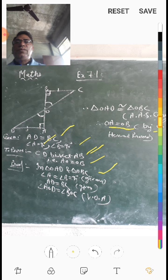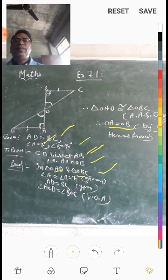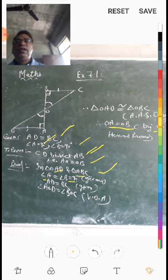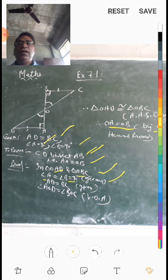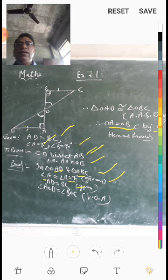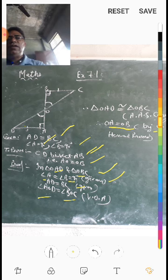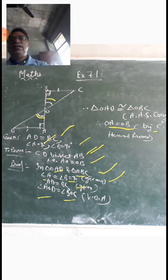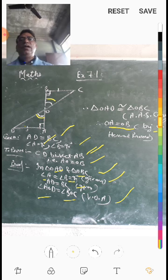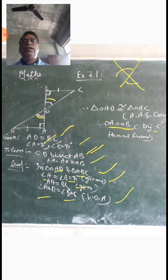We take triangle OAD and triangle OBC and prove them congruent. In triangle OAD and triangle OBC: angle AOD and angle BOC are vertically opposite angles because when two lines intersect, the vertical opposite angles are equal.